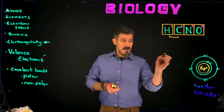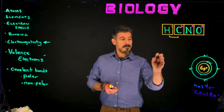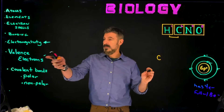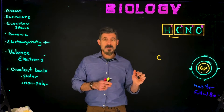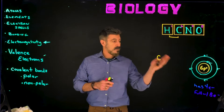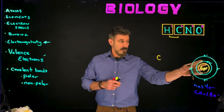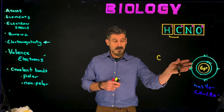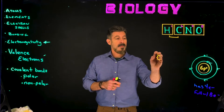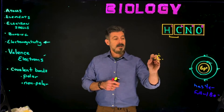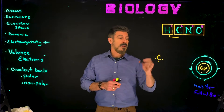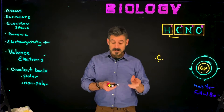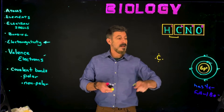For carbon, we're going to focus on what we call valence electrons. The valence electrons are the ones in the outer shell, and we're going to be ignoring any inner electrons for now. So there are four electrons in the outer shell, and carbon needs four more to fill up that shell.